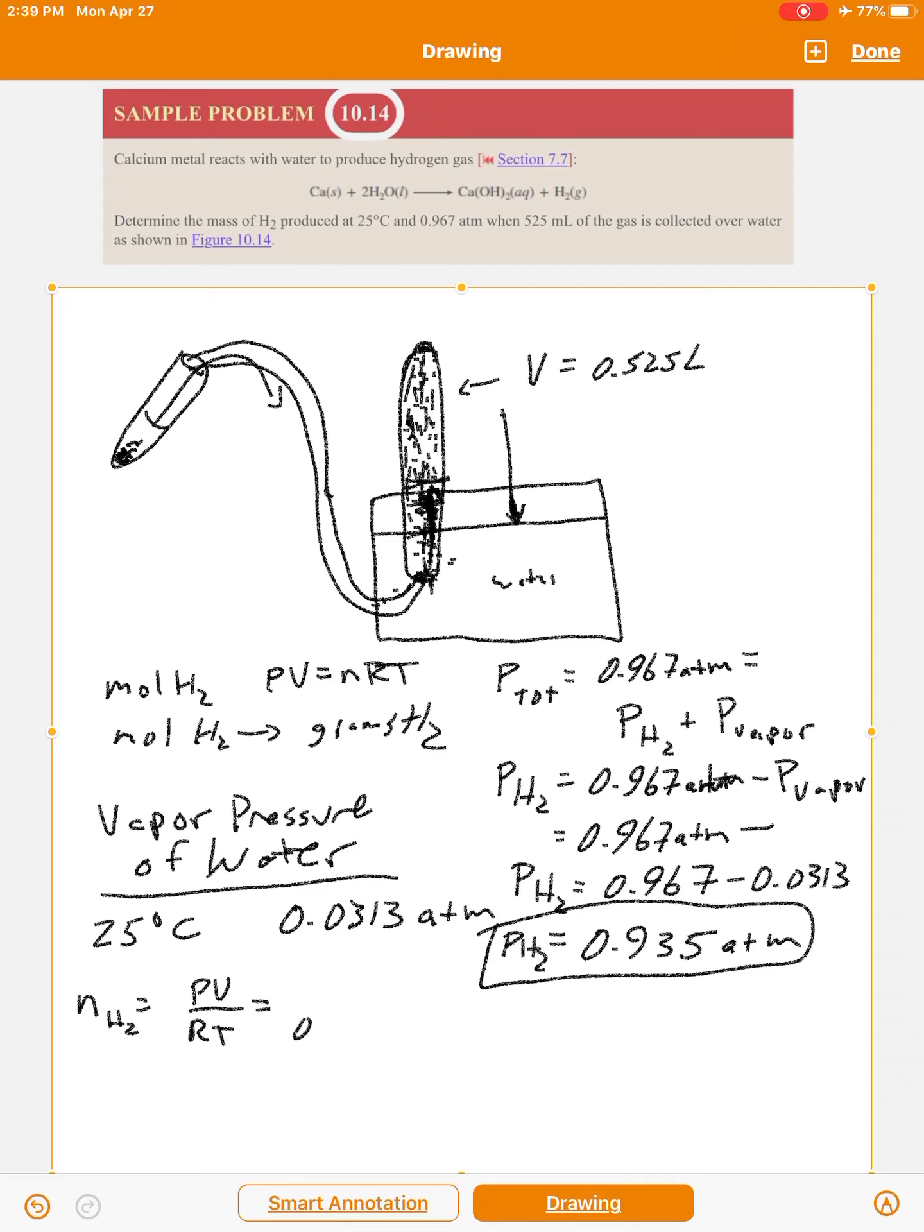So 0.935, that's the pressure. The volume is 0.525. R is 0.08206. And then T is 298.15.